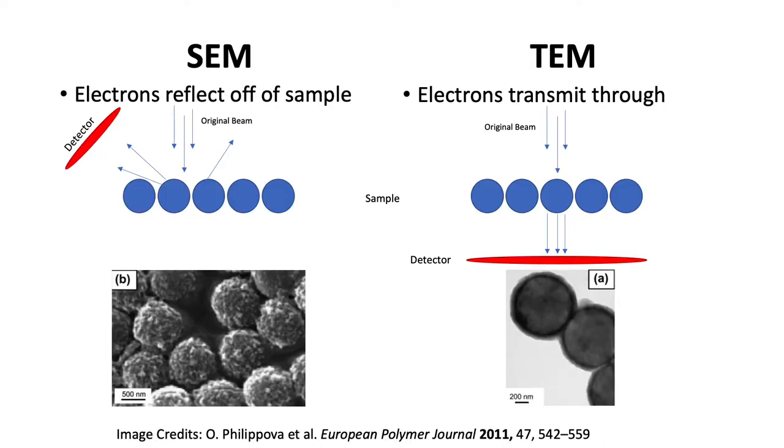In Transmission Electron Microscopy, the electrons penetrate and travel through a sample onto a detector, whereas in Scanning Electron Microscopy, the electrons are scattered off of the sample and go upwards towards the detector.